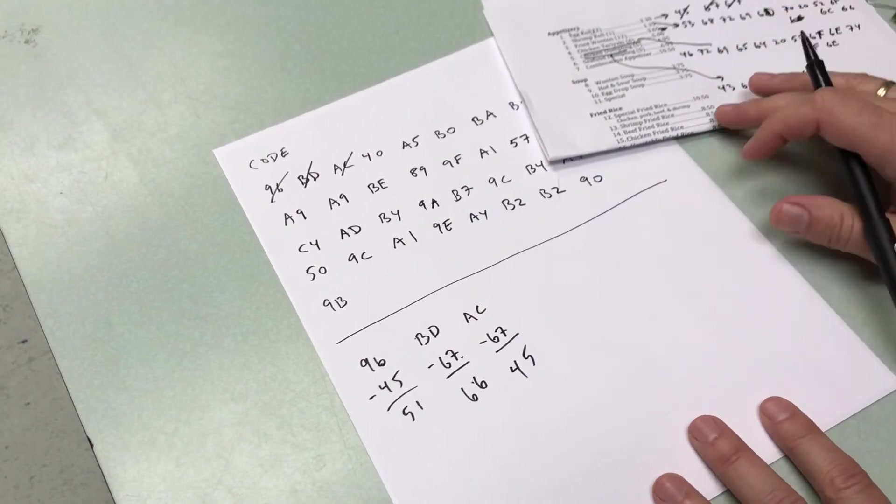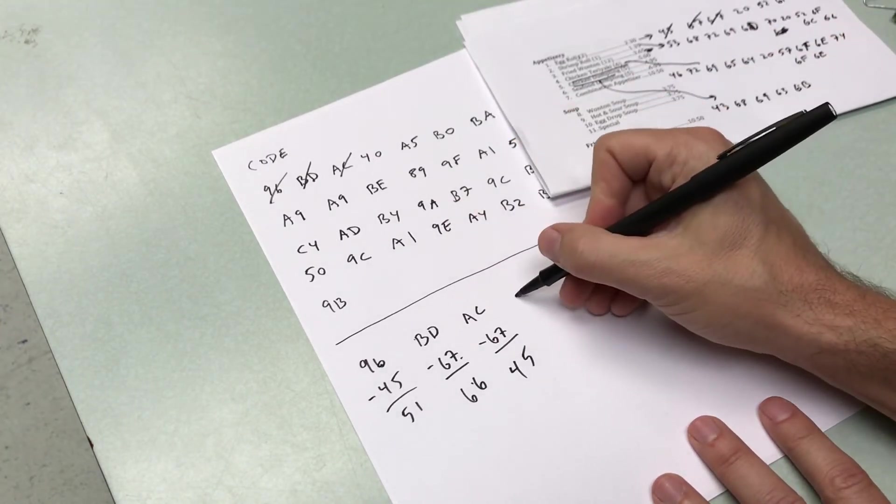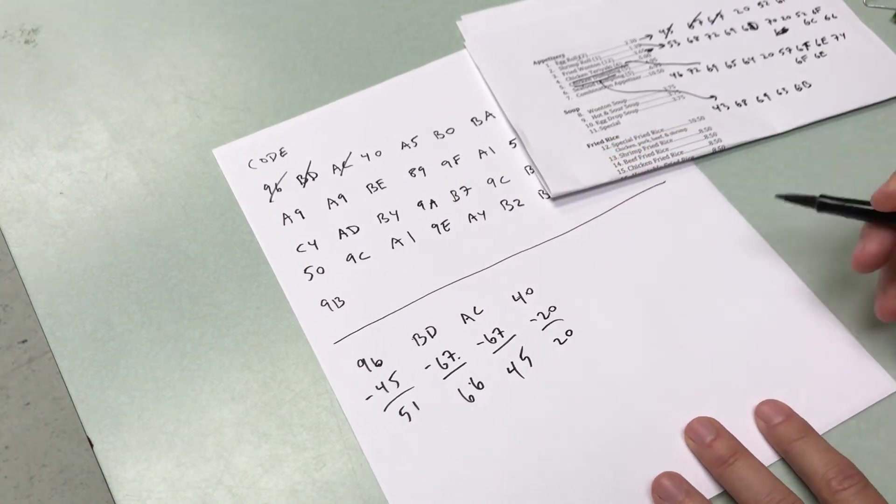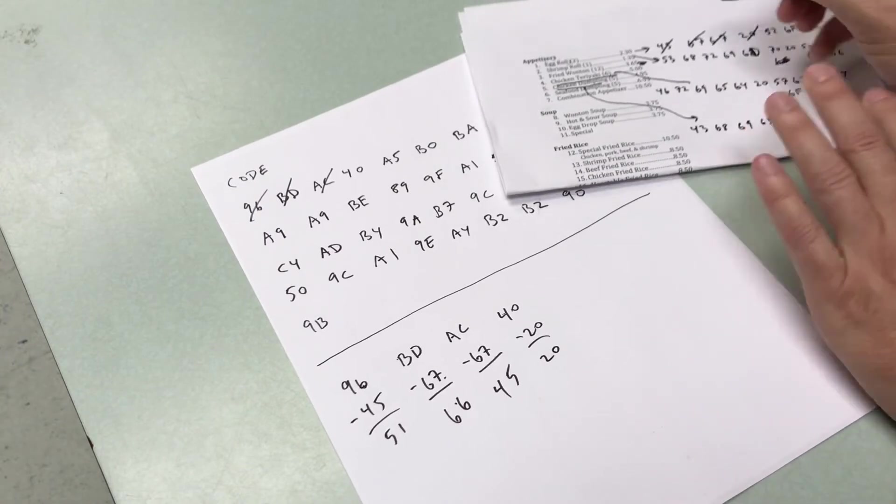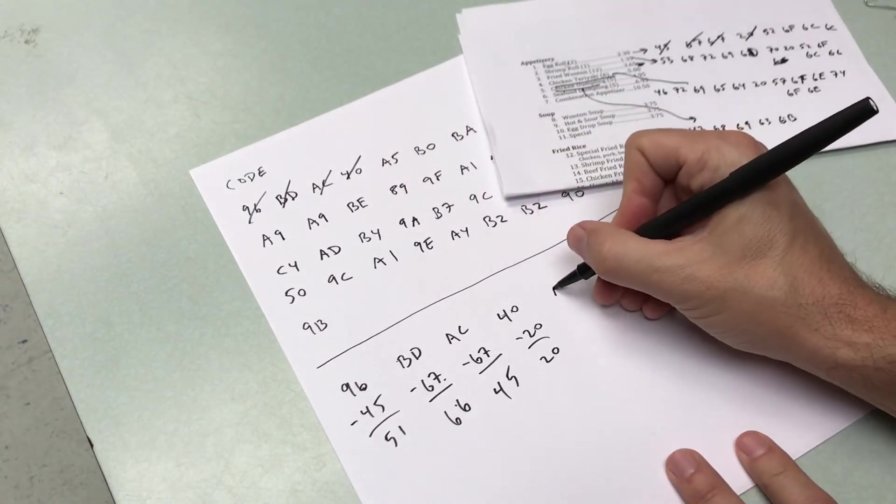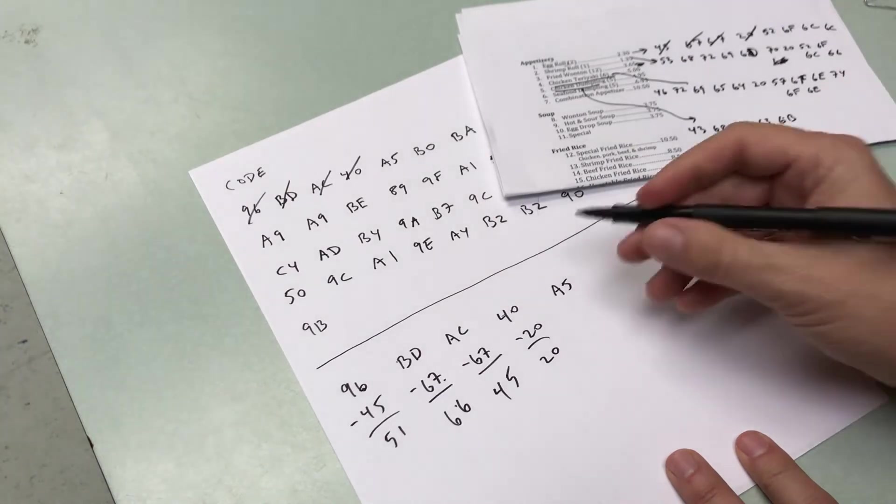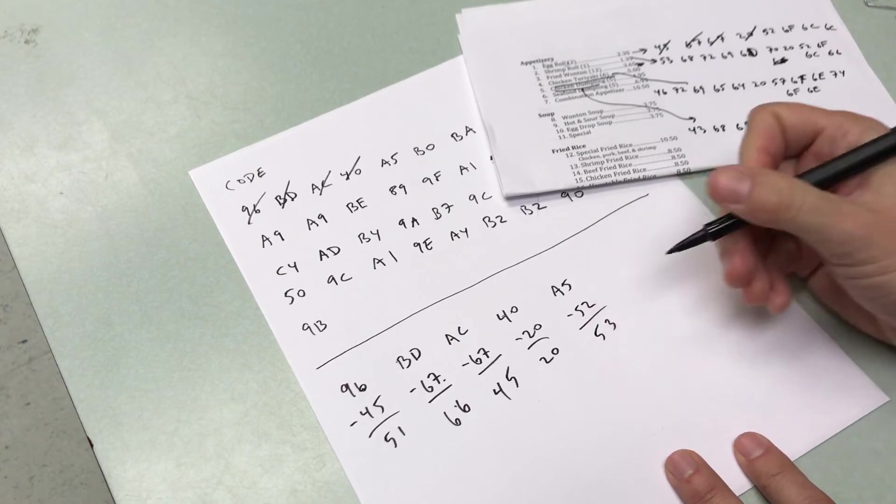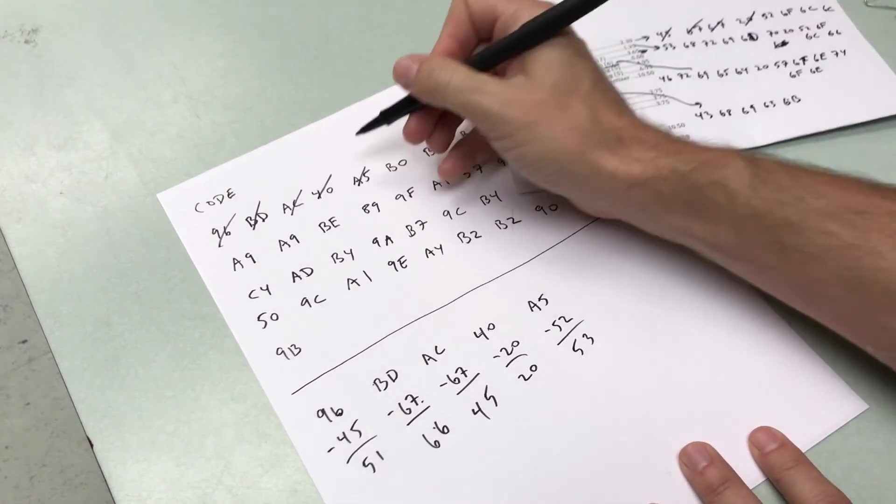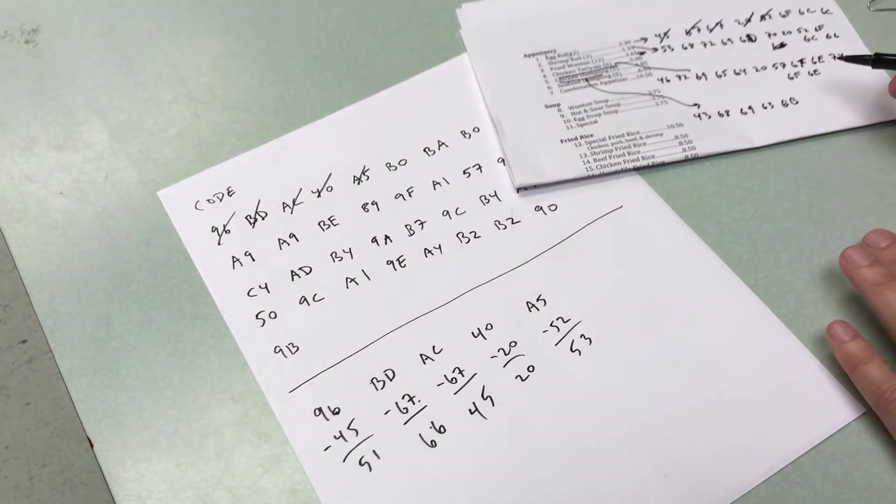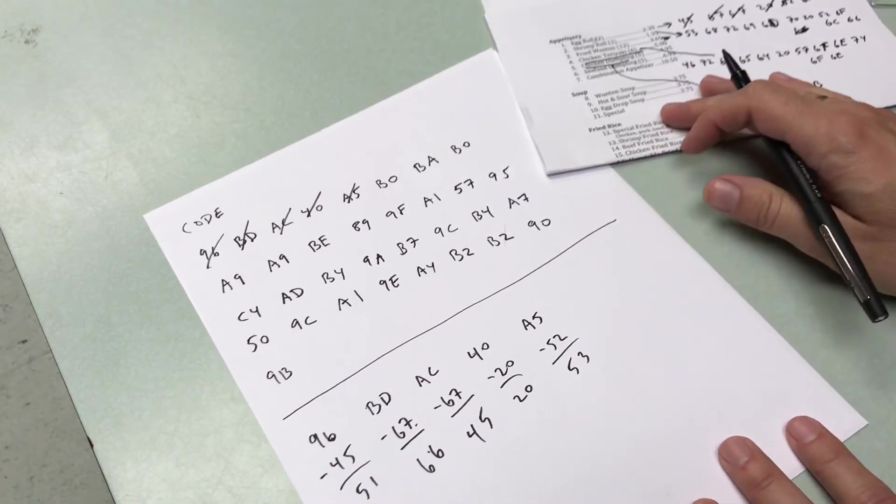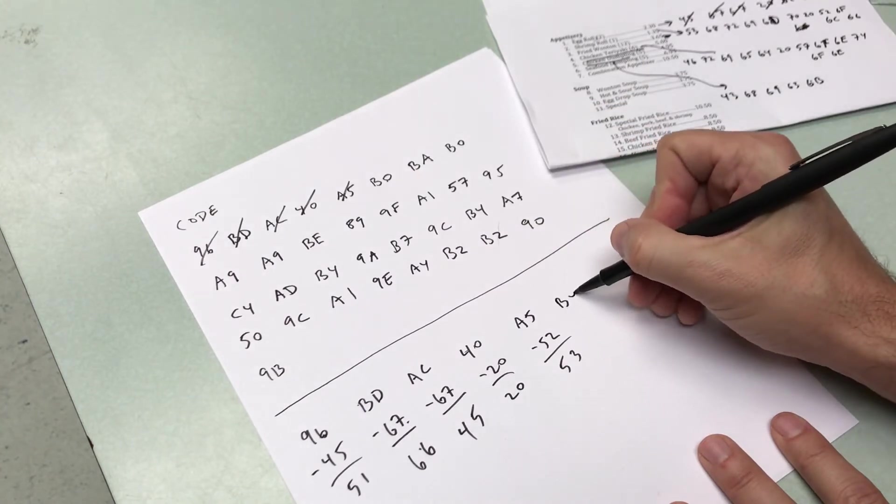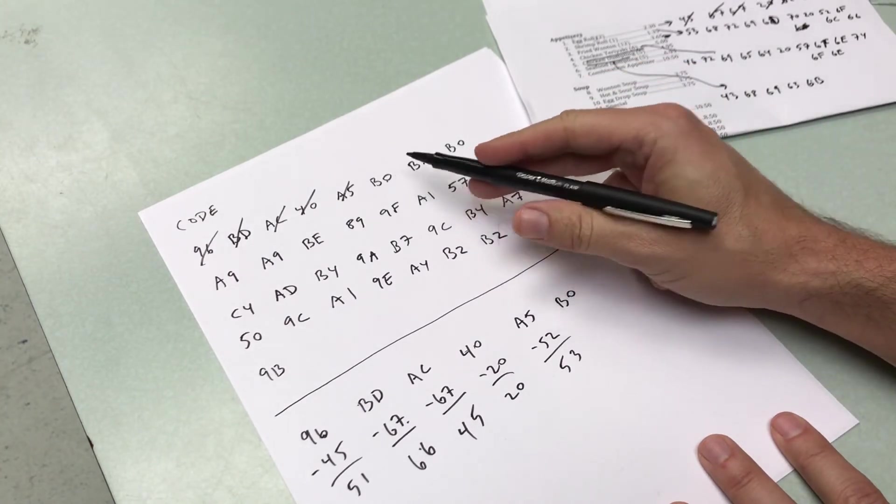This is why they invented computers. Because computers can do this. This is an easy one. 40 minus 20. 20. 20. Boom. I did that one. Didn't even have to work. A5 minus 52. I can do this one. That's 3, 5. What's my time here? Seven minutes. Yes. I'm going to keep going.